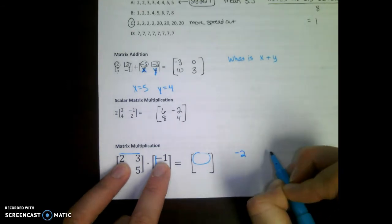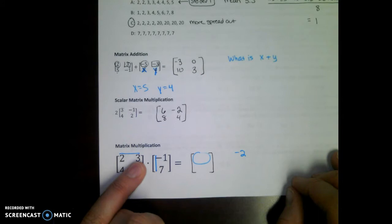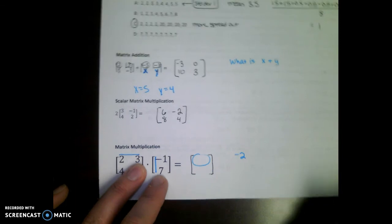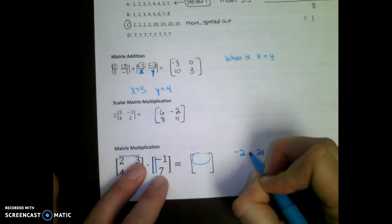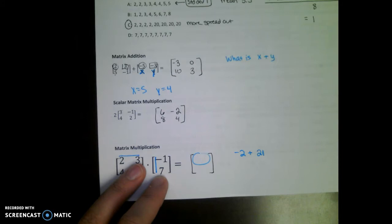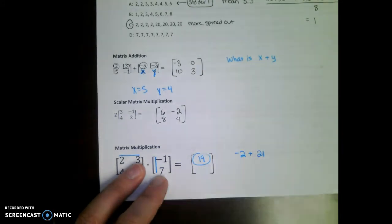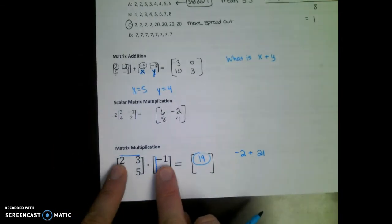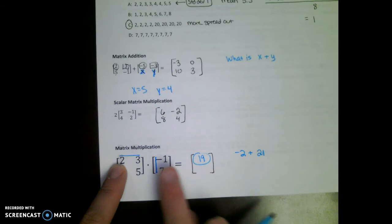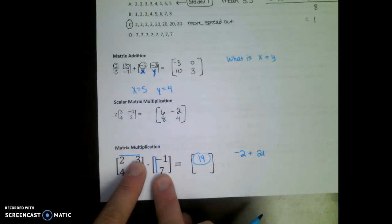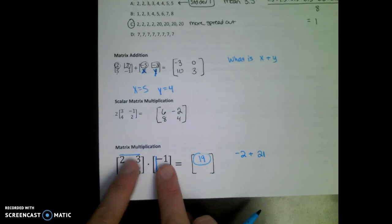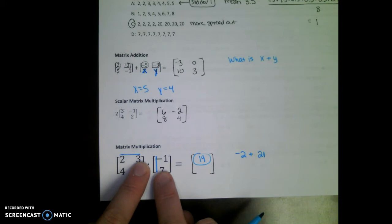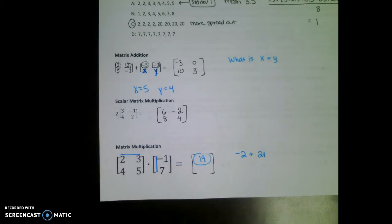Negative 2. Then you do the second number in the row times the second number in the column. What is 3 times 7? Add those two numbers together. What is negative 2 plus 21? That's the first number in your answer matrix. I did 2 times negative 1 to get 2, and then I did 3 times 7 to get 21, and then add them together. So first term, first term, multiply. Second term, second term, multiply. Add them together. And you always do row with column.